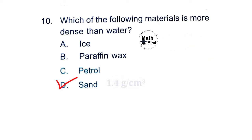The density of sand is 1442 kg/m³; density of ice is 0.91 g/cm³; paraffin is 0.9 g/cm³; whereas the density of water is 0.99 g/cm³. Objects which have more density than water will sink into the water.